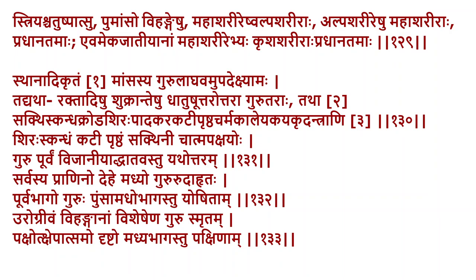Animal body sources need not only be meat — it could be from rakta (blood) to shukra dhatu, and these gradually have enhanced guru property. The flesh from shakti (thighs), skanda (shoulder), and khoda (buttocks) differs. From charma (subcutaneous) and antradi (liver and intestines), guru quality increases. Shakti (thigh flesh) is considered laghu, whereas intestines and liver are more guru. Chicken thighs represent shakti and liver kheema.